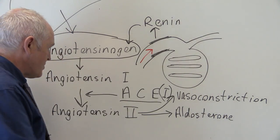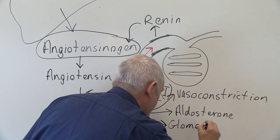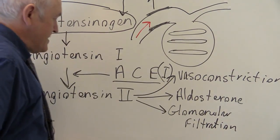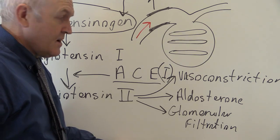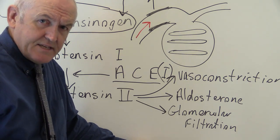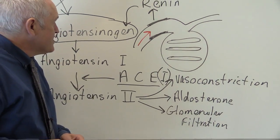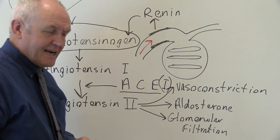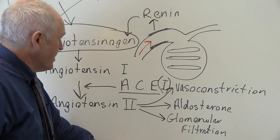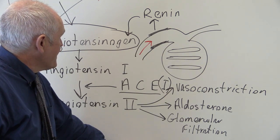Angiotensin type 2 will also affect glomerular filtration rate, and changes in glomerular filtration rate influence the amount of sodium and fluid retained or excreted by the body. So the kidney produces renin, which acts on angiotensinogen produced by the liver, thereby controlling vasoconstriction, aldosterone secretion, and glomerular filtration rate itself.